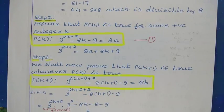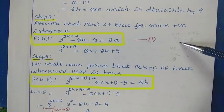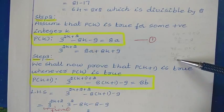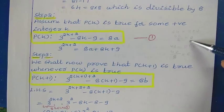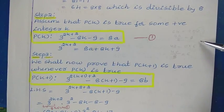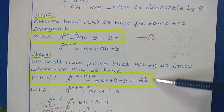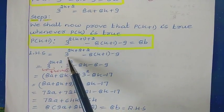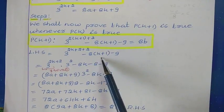Divisible by 8 means we can write the number in the form 8 into some number — for example, 64 is 8 into 8, and 48 is 8 into 6. So all such numbers can be written as 8 times some natural number. In the case of P of k we use a, and for P of k plus 1 we use b. Now to prove this, I will consider the left-hand side of P of k plus 1, which gives 3 to the power 2k plus 2 plus 2, minus 8 into (k plus 1) minus 9.